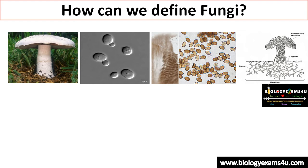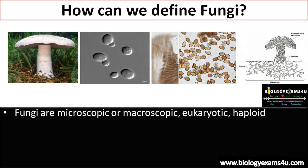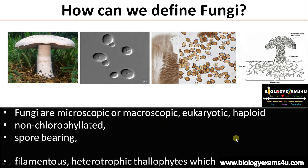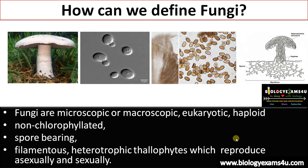How can we define fungi? It's an extremely diverse group of organisms. Fungi are microscopic like yeast, or macroscopic like Agaricus. They are eukaryotic with a true nucleus, haploid, non-chlorophyllated, spore-bearing, filamentous, heterotrophic thallophytes which reproduce asexually and sexually.